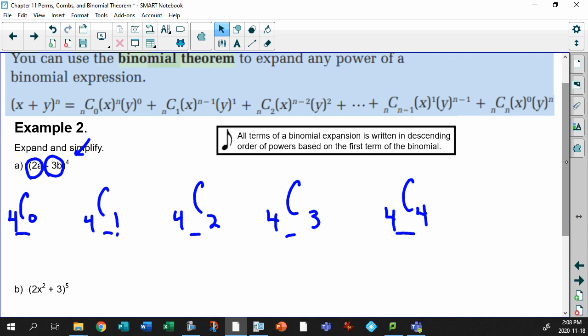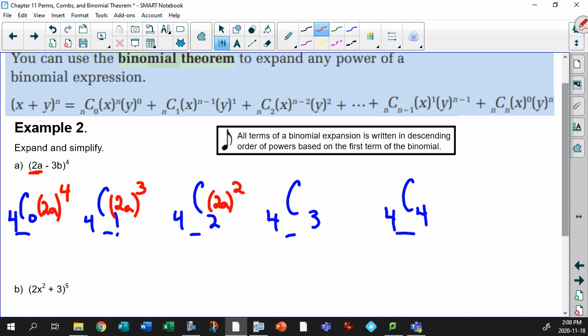So now, how do we do the rest? Real super simple. Check this out. Here's my x. So this will be 2a to the 4, this will be 2a to the 3, this will be 2a to the 2, this will be 2a to the 1, and this will be 2a to the 0, which is just 1. Then keep on going.